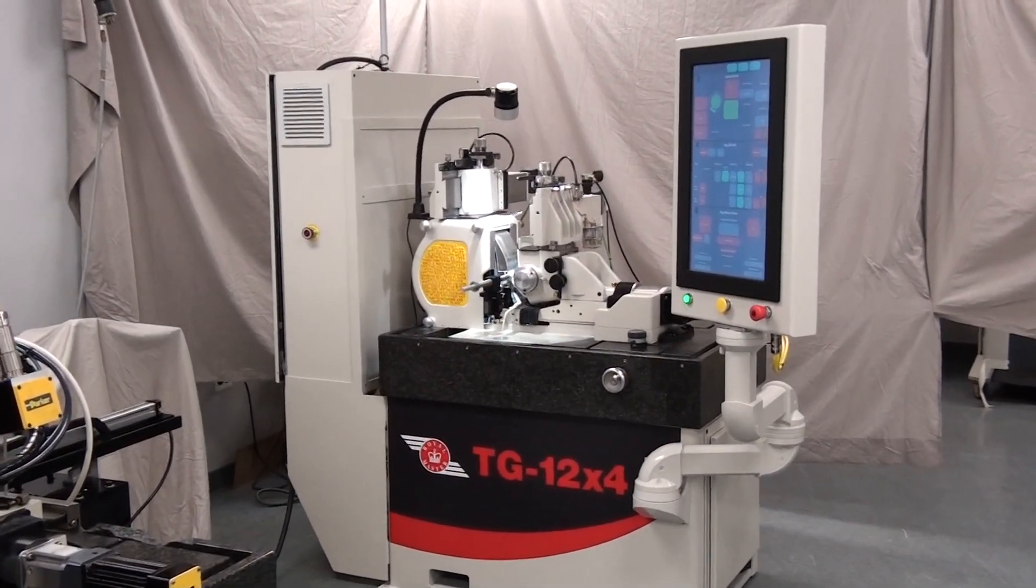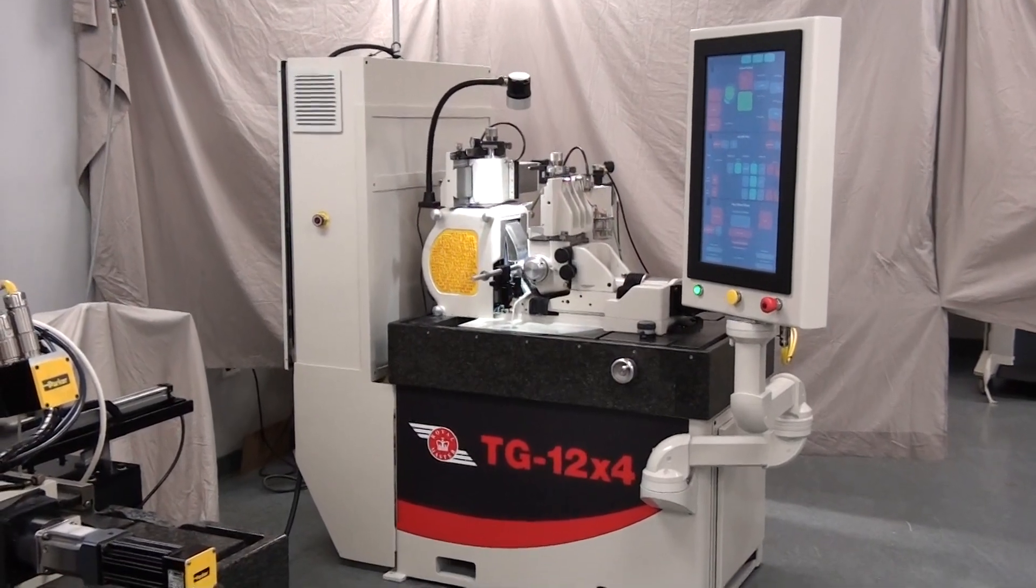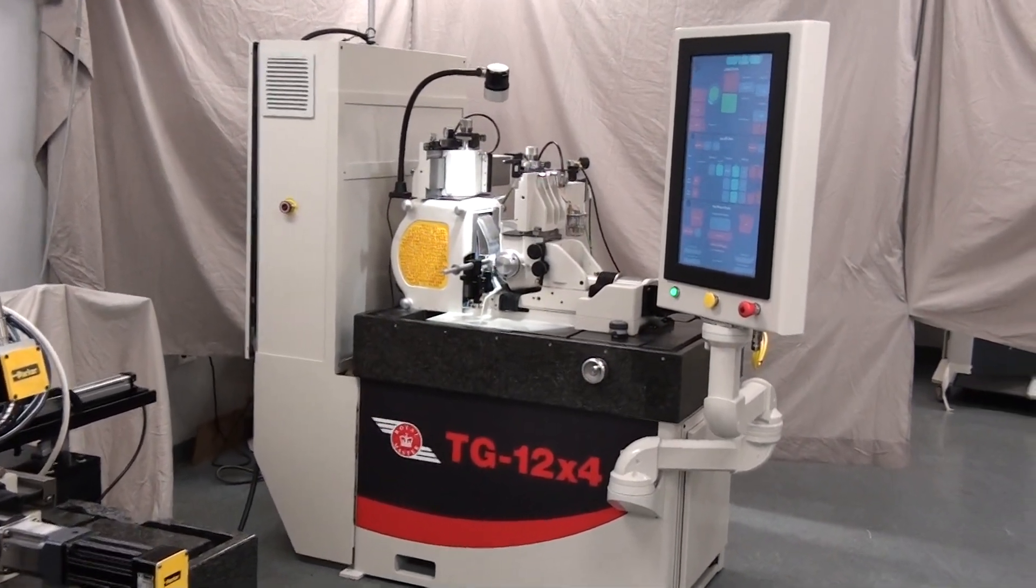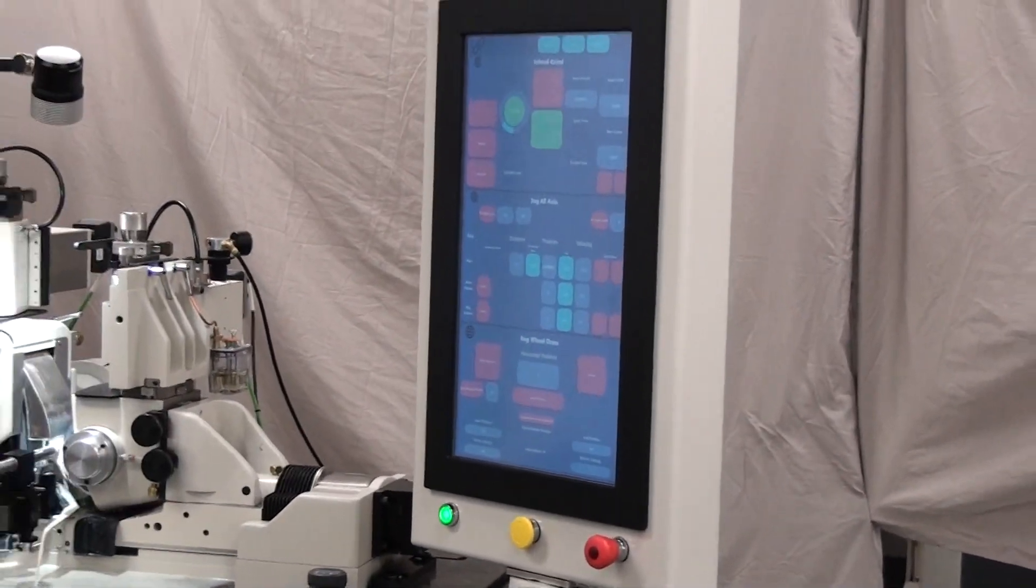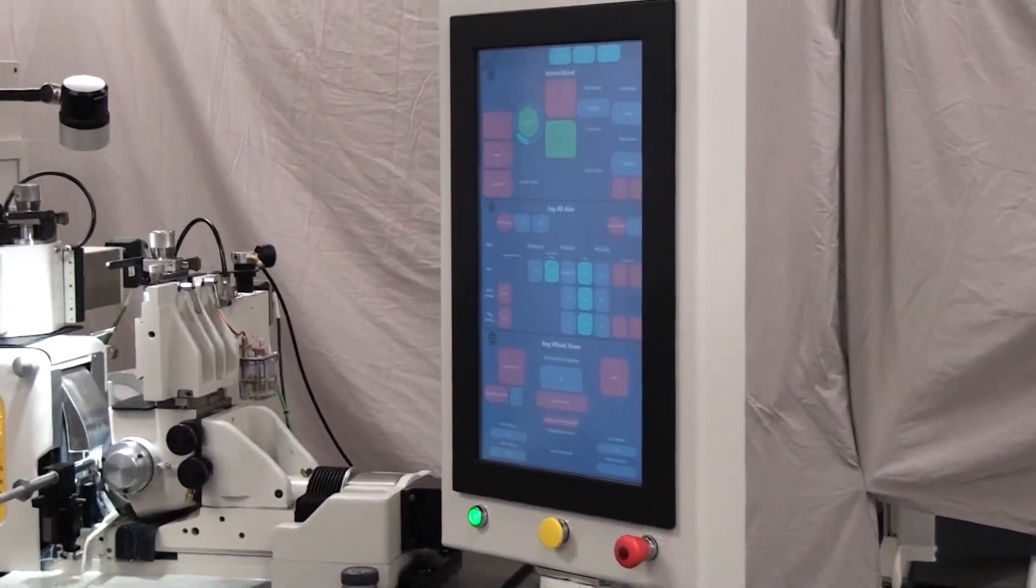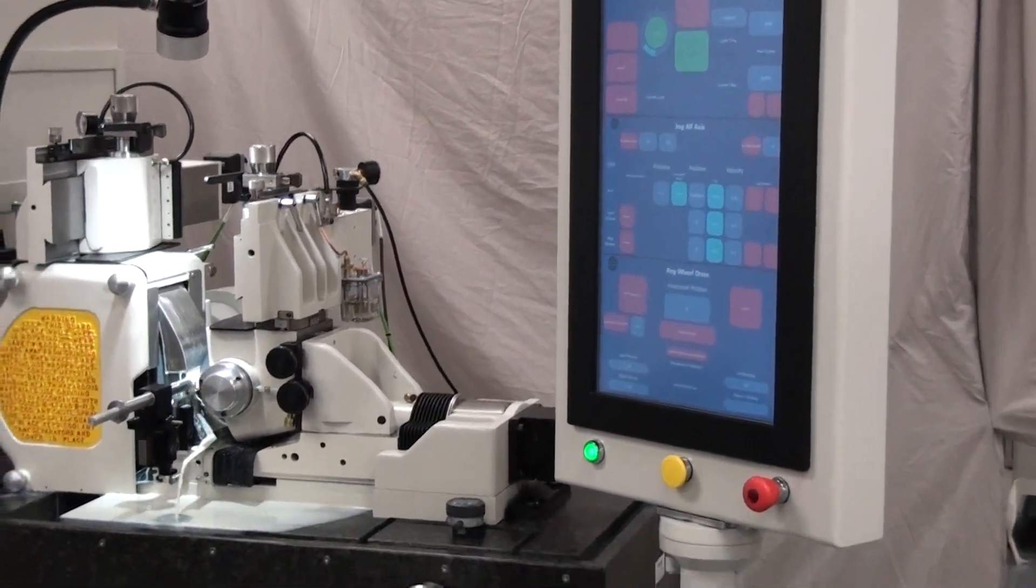The machine automatically reports its functions to the Advanced Machine Optimization, AMO, cloud database. By activating the AMO feature on your Royal Master, your grinder will start to report machine-specific information to our secure cloud database.